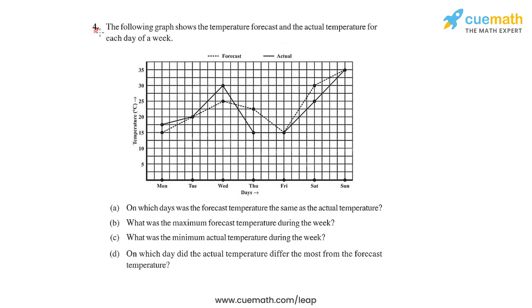In question number four of this first exercise, we have been given a line graph which shows the temperature forecast and the actual temperature for each day of a week. There are two lines: the dotted line represents the temperature forecast and the solid line represents the actual temperature. The x-axis represents the days and the y-axis represents the temperature in degrees Celsius.